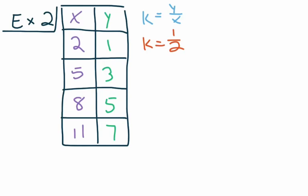For the second pair, K = 3 over 5. Right away, we can see that 1/2 and 3/5 are both fully simplified. Because they are not equal, that tells us this table does not represent a proportional relationship.